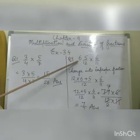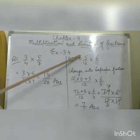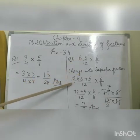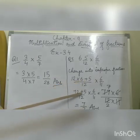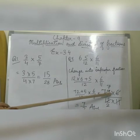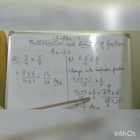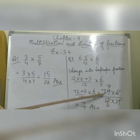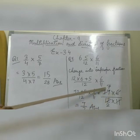Question number 5: 6 and 5/12 multiplied by 6/11. We have one mixed fraction and a proper fraction. First, convert the mixed fraction to an improper fraction: 12 multiplied by 6 plus 5 upon 12, which gives 72 plus 5 upon 12, that is 77/12. Now multiplying 77/12 by 6/11: product of numerators is 77 × 6, product of denominators is 12 × 11. Simplifying, 11 × 7 is 77 and 6 × 2 is 12, so the answer is 7/2.